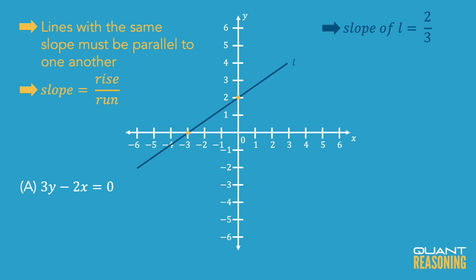In order to isolate y, I'd have to start by adding 2x to both sides and then dividing both sides by 3, and yep, that's going to give me a coefficient of 2 thirds for x. So it turns out A is the correct answer. We can go ahead and move on to the next one.